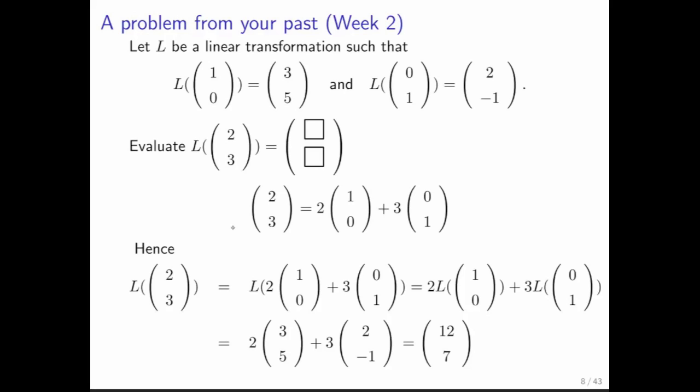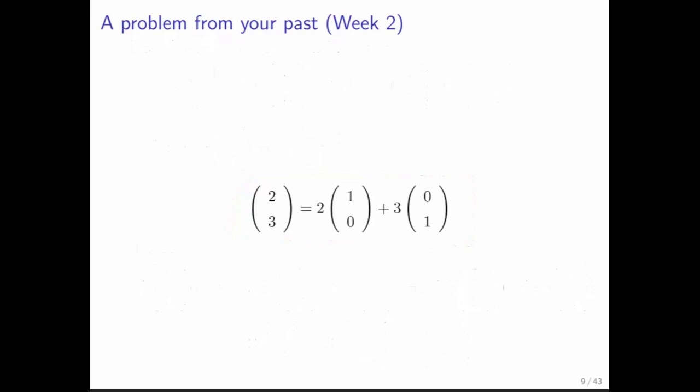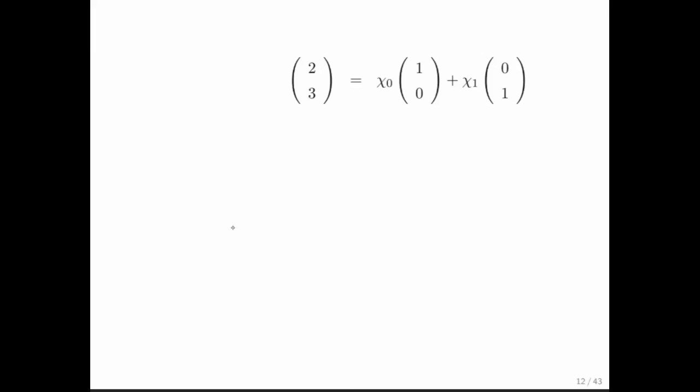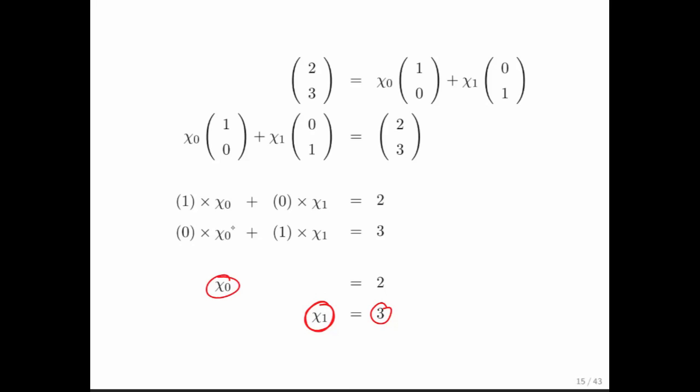So that one was a particularly easy one because it involved the vectors 1, 0 and 0, 1, and therefore identifying what this linear combination was was easy. So now let's look at a more systematic way of identifying what those coefficients should be. We can give them a name, chi 0 and chi 1. We can then look at this, switch things around, multiply out, and identify two linear equations in two unknowns, and of course solving this is particularly easy because you can just read off that chi 1 is equal to 3 and chi 0 is equal to 2. So that problem is very easy to solve.